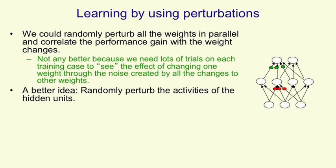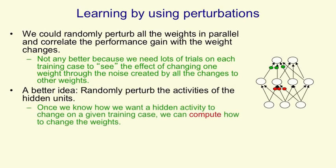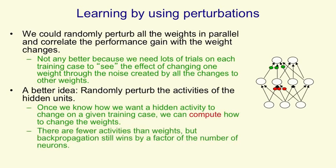Something that does help is to randomly perturb the activities of the hidden units instead of perturbing the weights. Once you've decided that perturbing the activity of a hidden unit on a particular training case is going to make things better, you can then compute how to change the weights. Since there are many fewer activities than weights, there are fewer things you're randomly exploring, and this makes the algorithm more efficient. But it's still much less efficient than backpropagation — backpropagation still wins by a factor of the number of neurons.